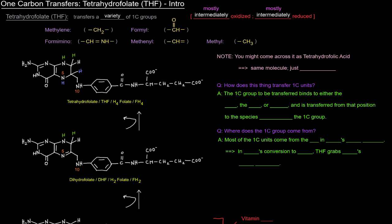So tetrahydrofolate transfers a variety of one-carbon groups, and we showed the methylene group, formyl, methenyl, and methyl. And we said that tetrahydrofolate was important in transferring intermediately oxidized or intermediately reduced one-carbon groups.